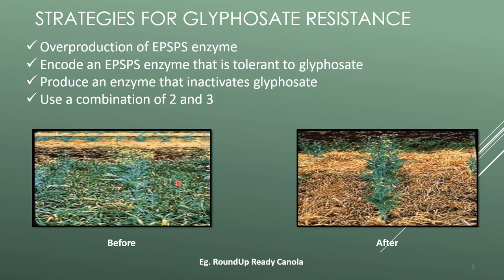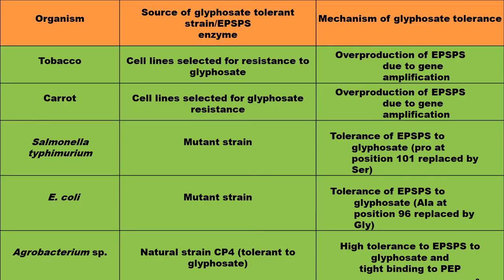After spraying herbicide into the field, you can see that only the transgenic plants are able to survive, whereas the weeds are already dead. These are some examples of transgenic plants that are tolerant to glyphosate.